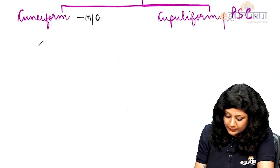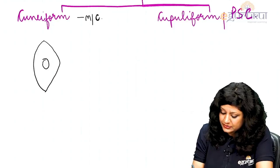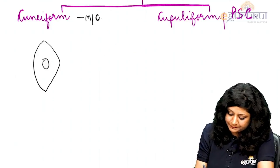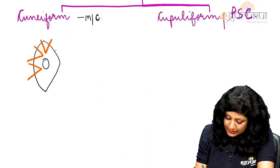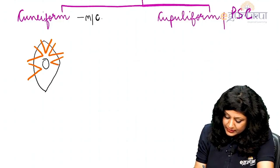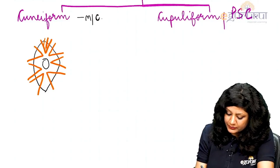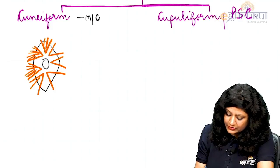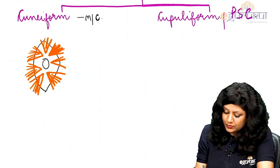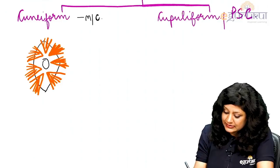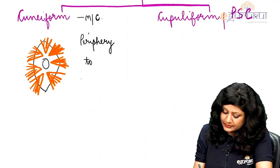In the cuneiform cataract, suppose this is the lens — we get wedge-shaped opacities which are starting from the periphery and then progressing towards the center. This type of cataract is called the cuneiform variety. So the opacities go from the periphery to the center.